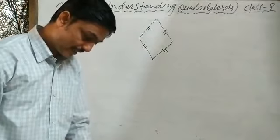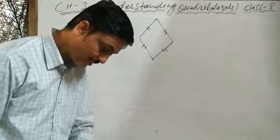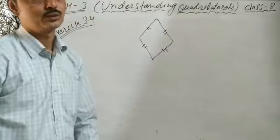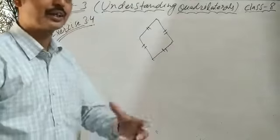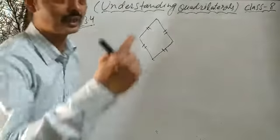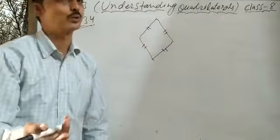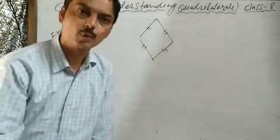Part G: All parallelograms are trapezium — yes, true. Because in each parallelogram, one pair of opposite sides are parallel, which satisfies the property of a trapezium.